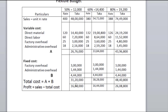After calculating total cost at each level, we determine profit. Sales minus total cost gives us the profit figure at 50%, 60%, and 80% capacity respectively.